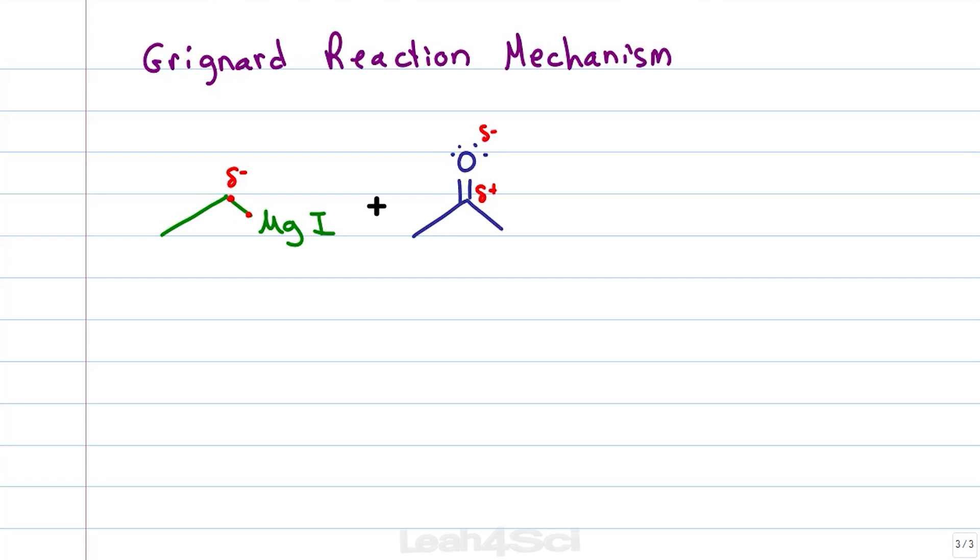The Grignard reaction begins when the carbanion-like electrons are going to reach out and attack the partially positive carbonyl carbon. This would put a fifth bond onto carbon which can't happen and so the pi bond is going to get kicked up onto the oxygen atom.